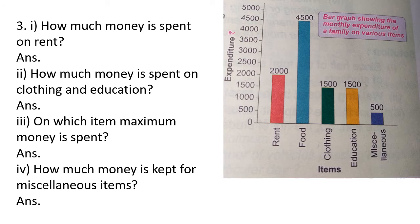In the next question, we have expenditure and items. This bar graph represents monthly expenditure of a family on various items. The family is spending 2,000 on rent, 4,500 on food, 1,500 on clothing, 1,500 on education, and 500 on miscellaneous. How much money is spent on rent? The money spent on rent is rupees 2,000.